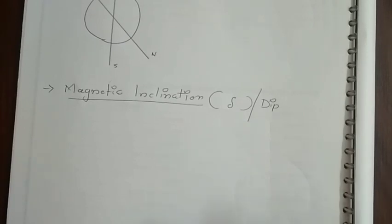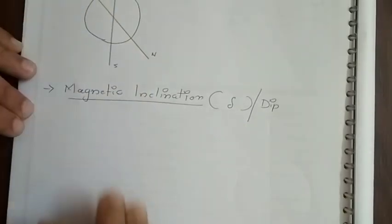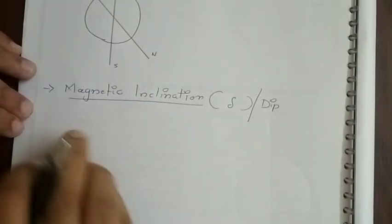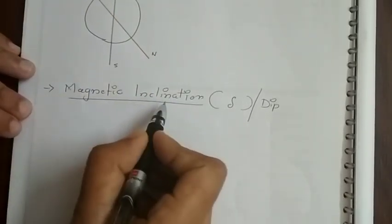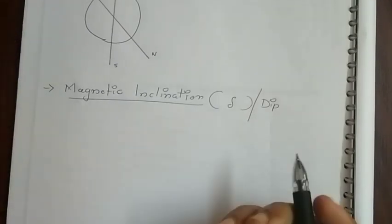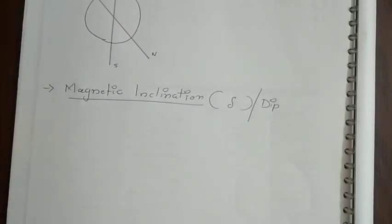We do not have to study all these in detail. Just understand that magnetic inclination is used to determine the direction of earth's magnetic field at any point on the earth's surface.